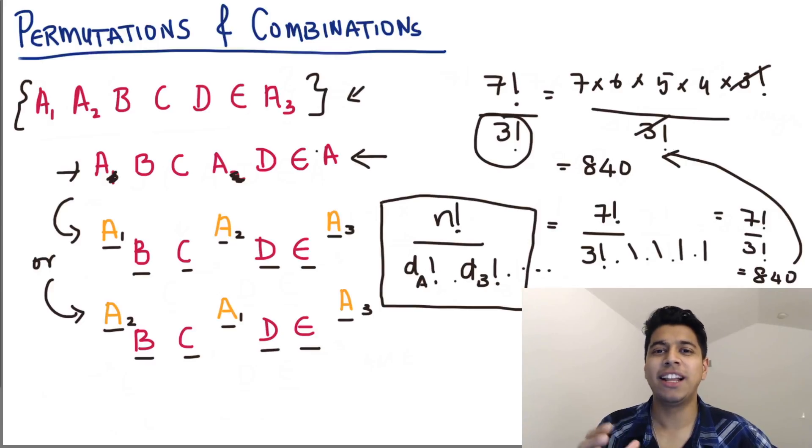Alright, so I know that this can be a little confusing to understand at first, but go over the video again, really think about this because once you get this concept, the rest of the sums become really easy. Think about it again, try and think through how these duplicate terms create duplicate arrangements, and how you can identify the number of duplicate arrangements. Once you get this, these sums start becoming super easy.